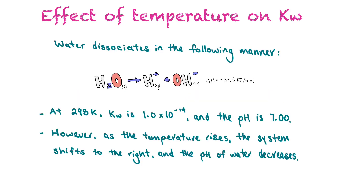First, we're going to talk about the effect of temperature on water's equilibrium constant. Water dissociates by breaking apart into a proton and a hydroxide ion, and the delta H for that reaction is positive 57.3 kilojoules per mole, which means it's an endothermic reaction.